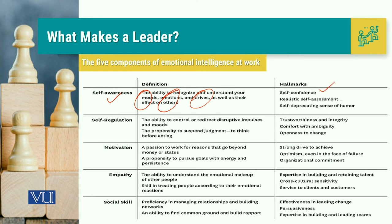The second factor is self-regulation. When we talk about self-regulation, its definition is the ability to control or redirect disruptive impulses and moods. The propensity to suspend judgment — to think before acting. These are the important things related to self-regulation.